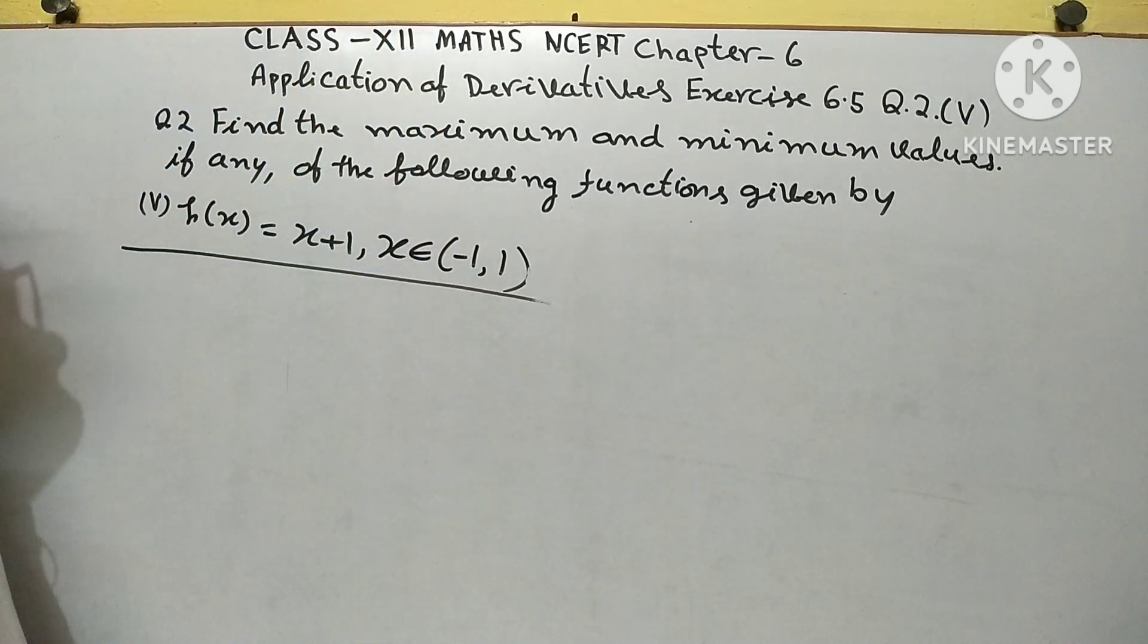Find the maximum and minimum values, if any, of the function given by 5th part: h(x) equals x plus 1, x belonging to the interval minus 1, 1.